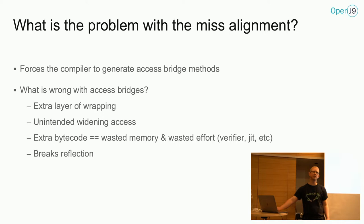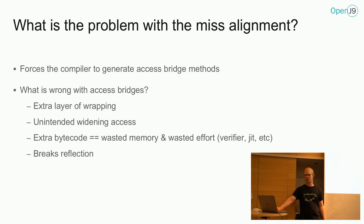The kinds of problems we see here is that you get these bridge methods. For the most part, most of the time you don't care — you get this extra layer of wrapping on your method, which means there's another method you have to load and verify. The JIT will see through it and inline through it, so there's no real actual cost most of the time, except a tiny amount of memory. It does widen the access, but the odds of doing anything particularly interesting with that slightly widened access are pretty low, given the names aren't stable — that $000 number just increments, so anytime you change the class you're going to get a different method. But the big one that seems to catch people, and it doesn't catch them very often, but when it does it's a giant pain, is reflection.